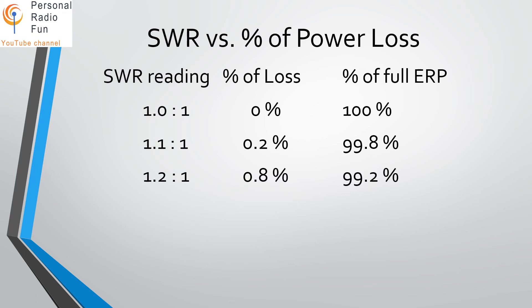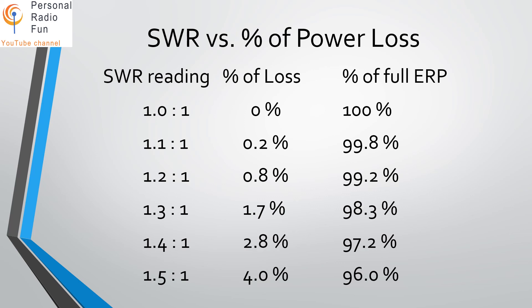Going up to 1.2 SWR, you might expect the loss to just be 0.4%, but that's not how it works — the loss increases more rapidly as you go higher. At 1.2 SWR, the loss is 0.8%, nearly one percent. At 1.5 to 1 SWR, you're losing four percent of your power, meaning 96% of the power is still getting out of the antenna.